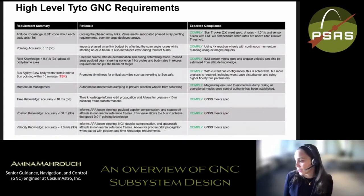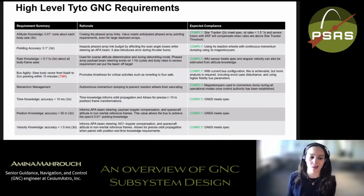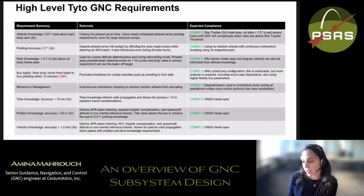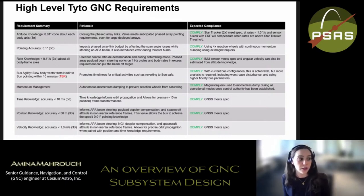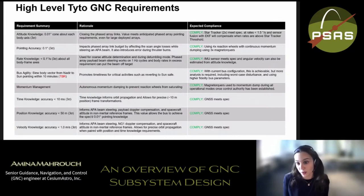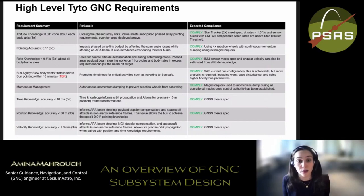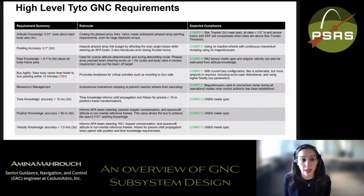Similar to our level-one requirements, we derive level-two subsystem requirements for GNC. These are broken into attitude determination and control requirements and position, navigation, and timing requirements. Starting with attitude knowledge — how well we know our spacecraft's orientation with respect to an inertially fixed frame — our requirement states that the spacecraft will know its orientation within 0.01 degrees about each body frame axis: three-axis control, three-sigma. That means 99.7% of the time we will know the attitude within 0.01 degrees, which is a very tight requirement.